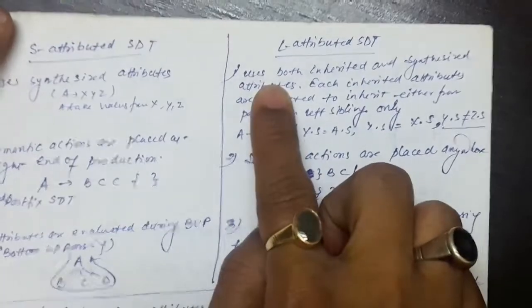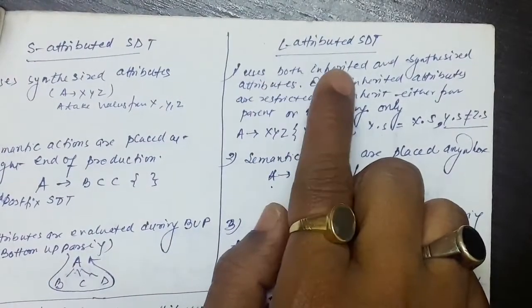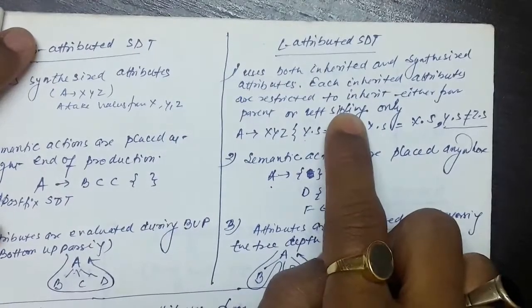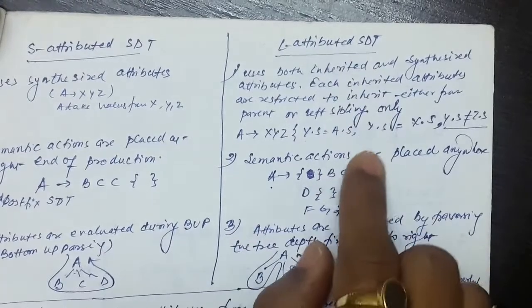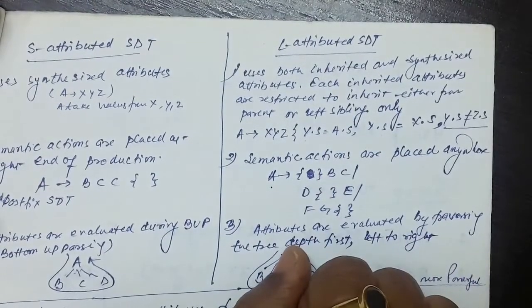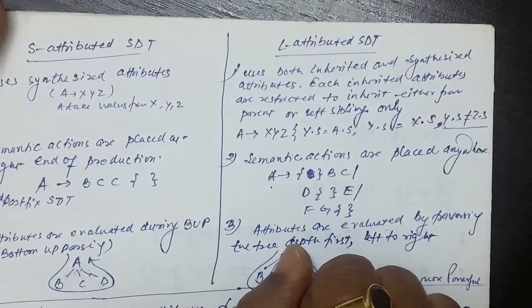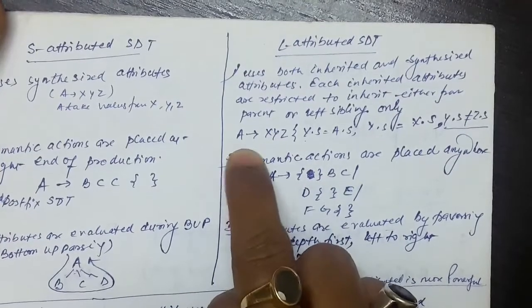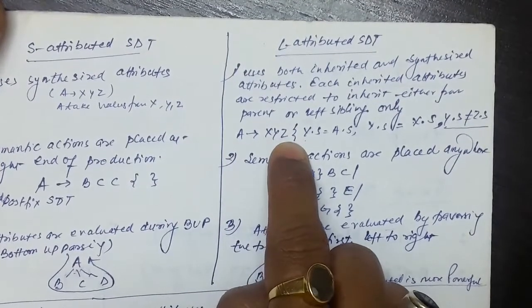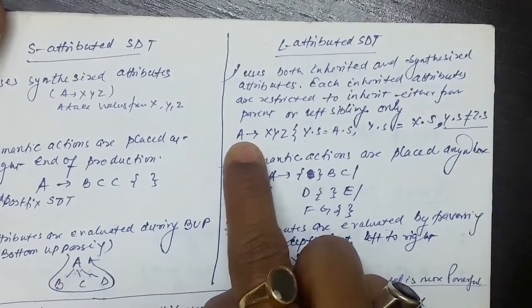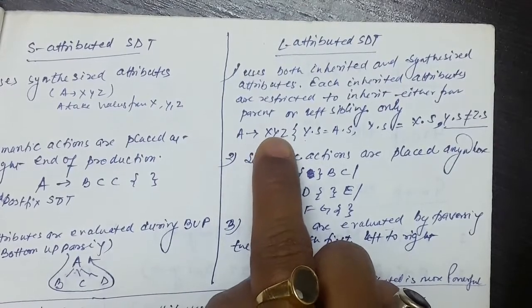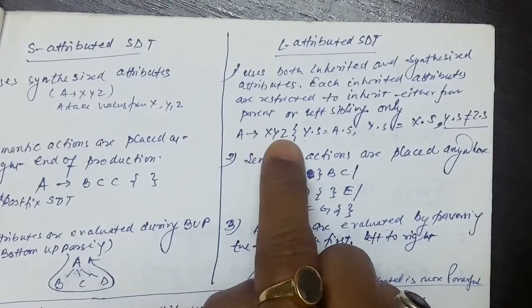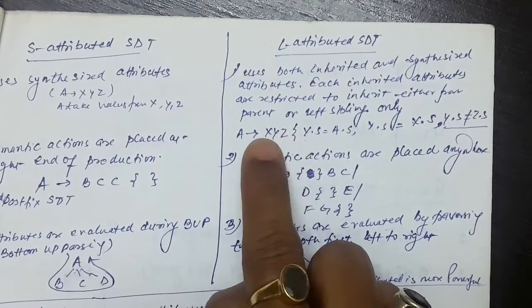The L-attributed SDT is a bit more powerful than the S-attributed. It is also called the inherited attributes SDT. In a production of kind A produces X, Y, Z, the parent A may take the value from the children, and the children may also take values from other children — specifically the left sibling only.